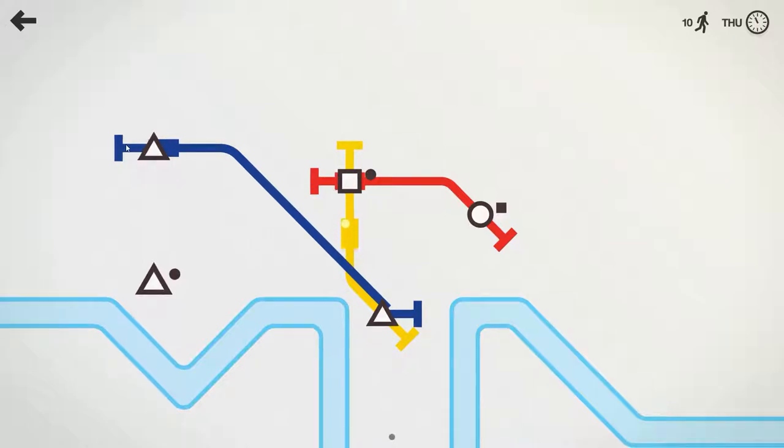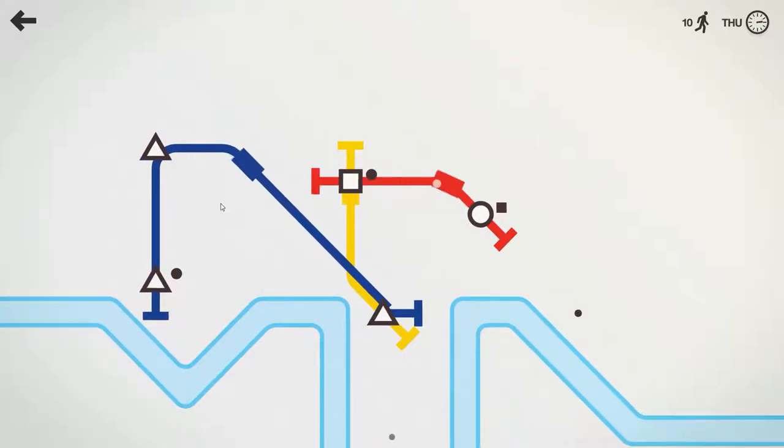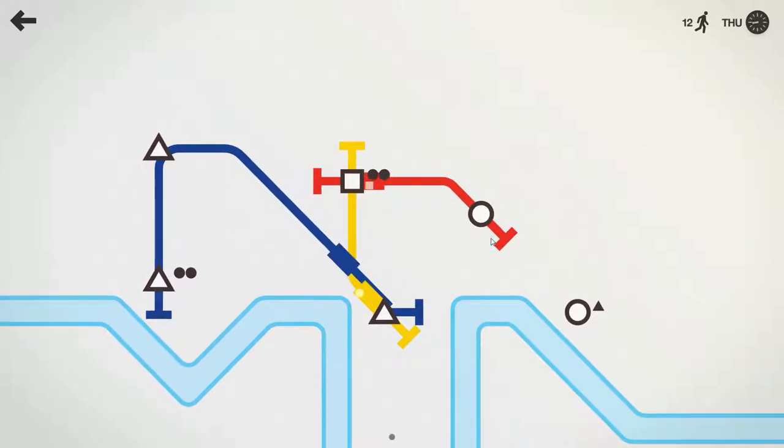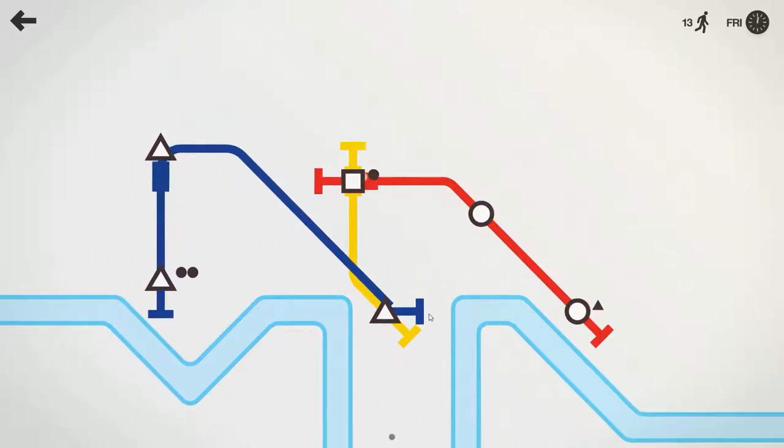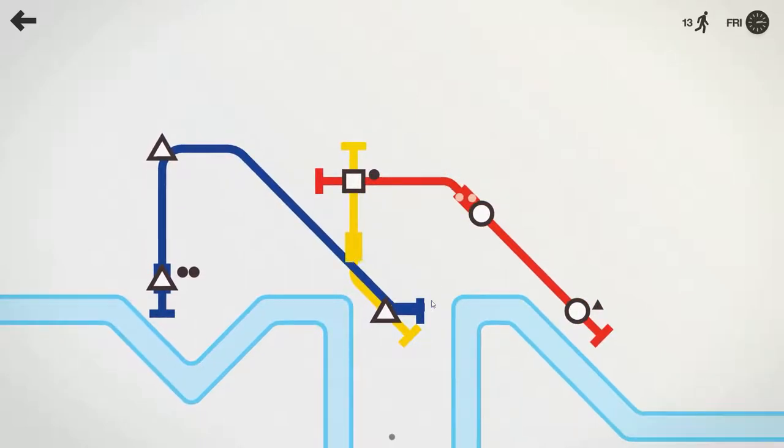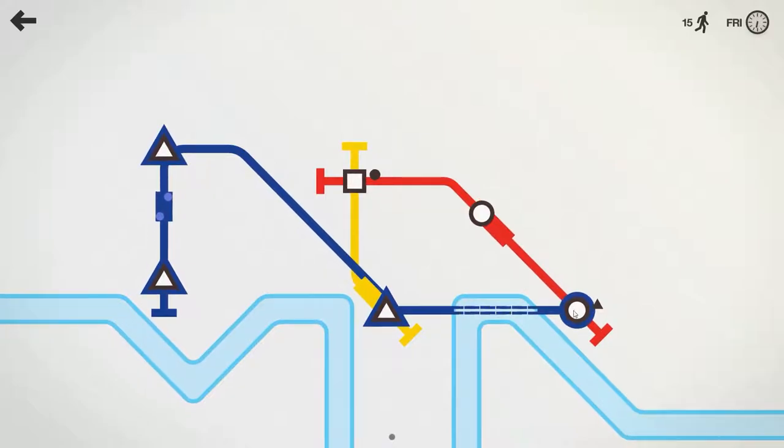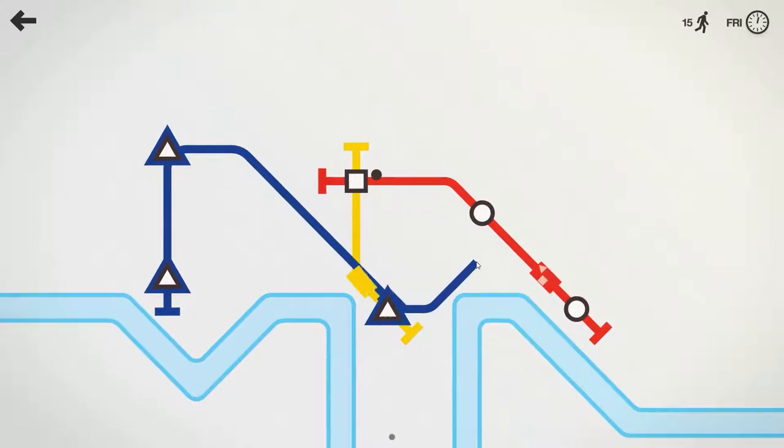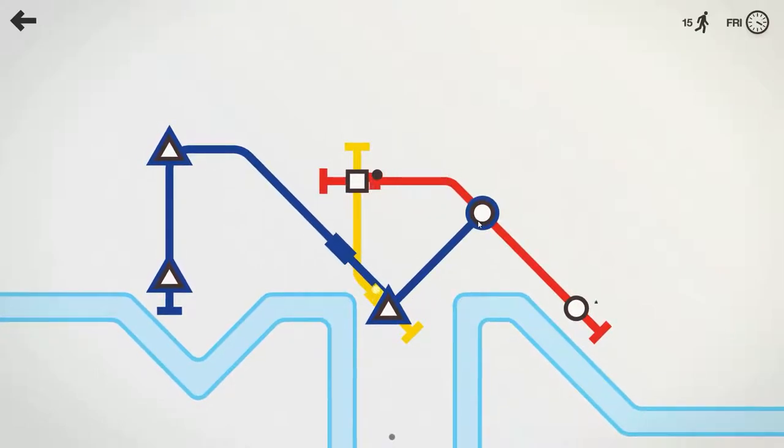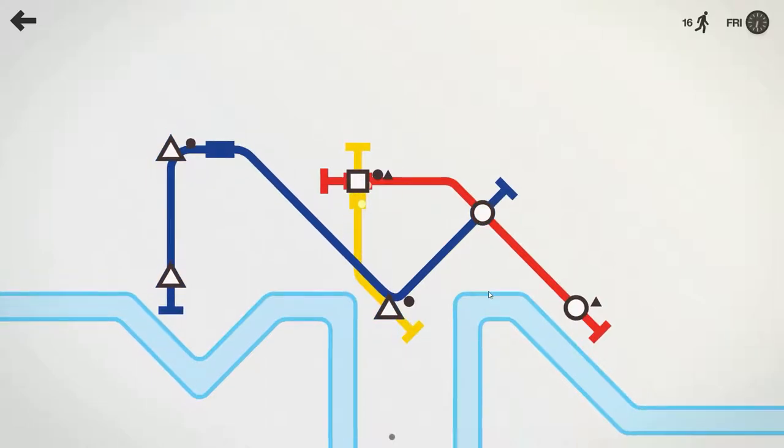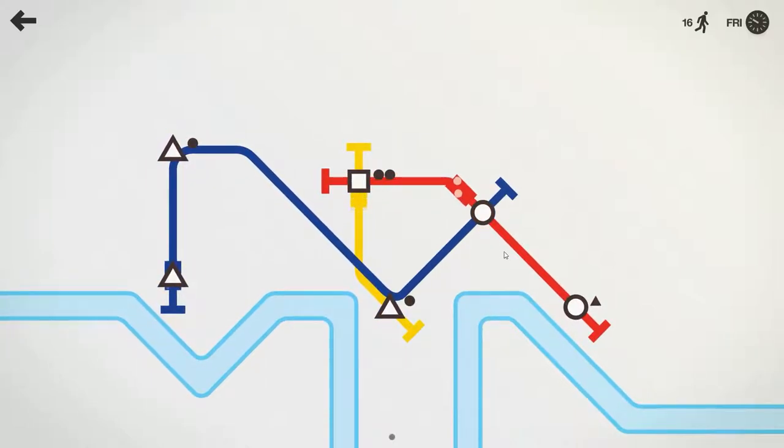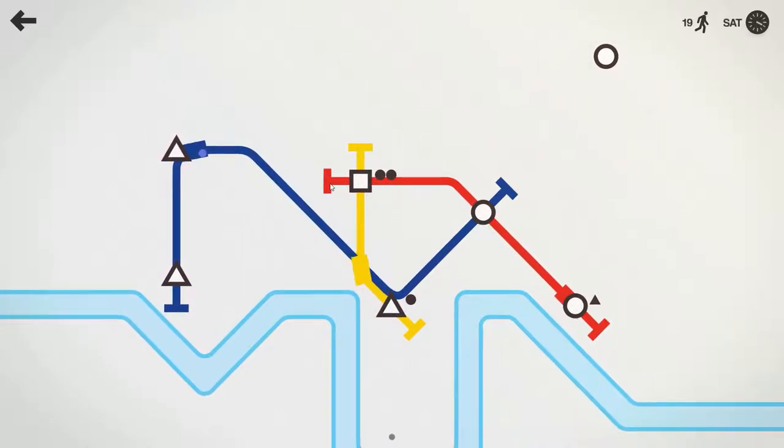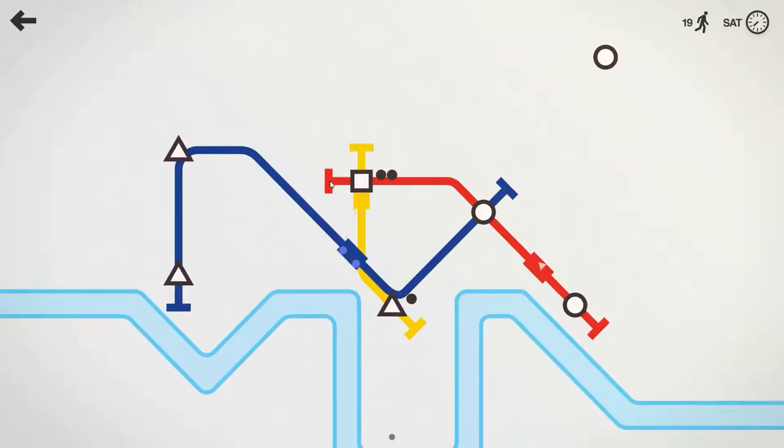We've got three tunnels. What we could do is continue the existing line. There we go, perfect. Now we've got another circle that wants to go over to a triangle. Now we've got two circle passengers waiting here.